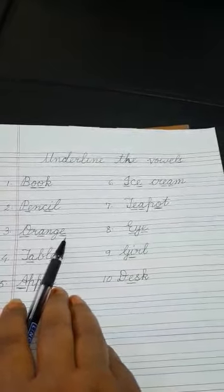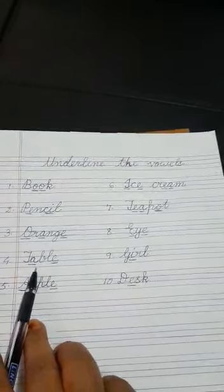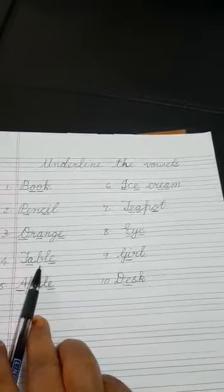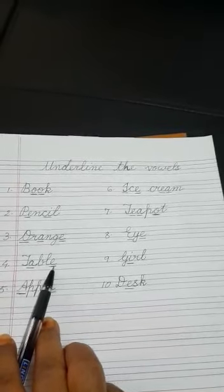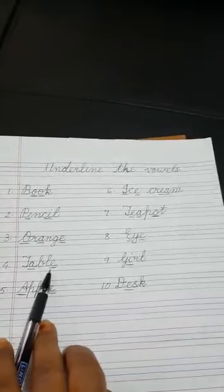Now next is table. T, A, B, L, E. Now what are the vowels over here? A and E.